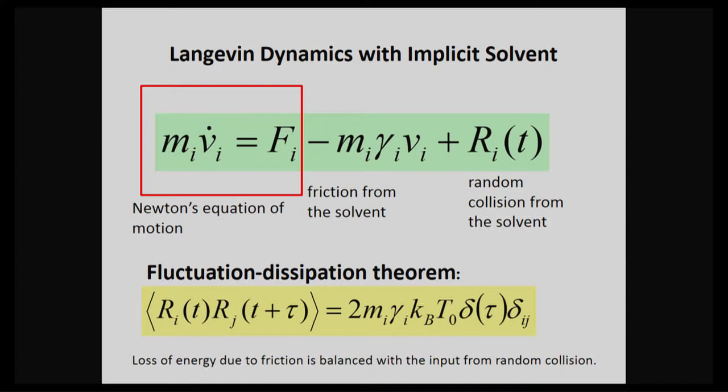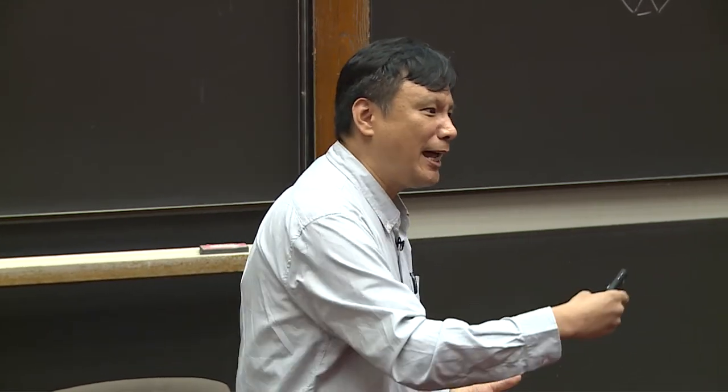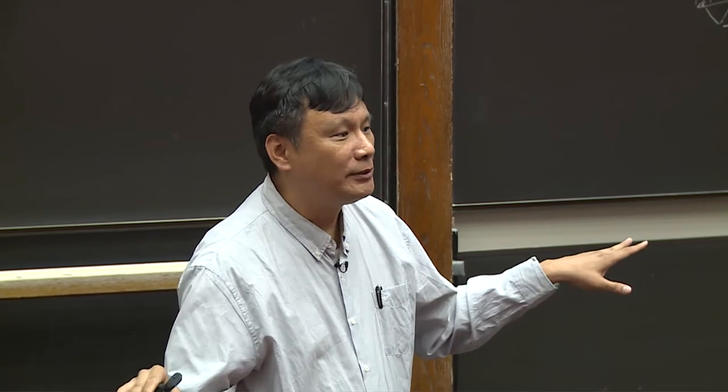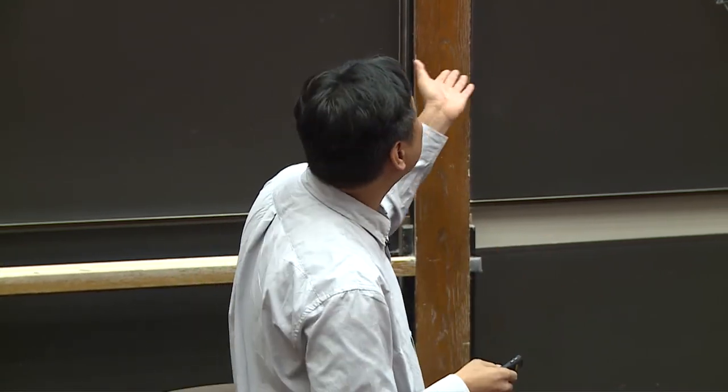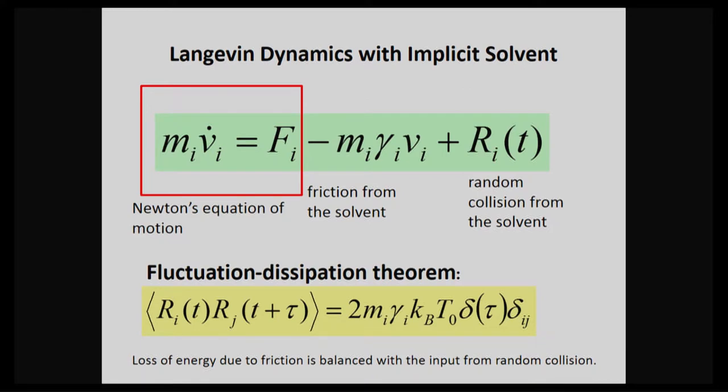If you use the implicit solvent description for your system, you don't really have the water molecules. How do you mimic the effect of solvents? So people use the so-called Langevin dynamics. Similarly, here you have a Newtonian equation of motion, F equals ma. And now you have a friction term. So imagine if you have a molecule inside water, they will have some frictions from water. They will reduce your kinetic energy. But on the other hand, water also collides on your molecule. So it gives you input of energy. So they will balance if you are in a thermal reservoir. So if you are in a reservoir of some constant temperature, then these two terms are in balance. This is the spirit of so-called Langevin dynamics. It's mainly used for implicit solvent. And the guiding theory to have the balance of the two is the so-called fluctuation-dissipation theorem.